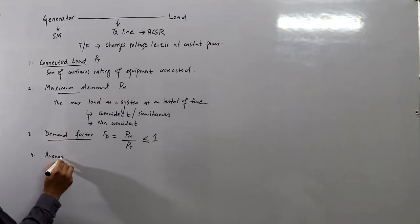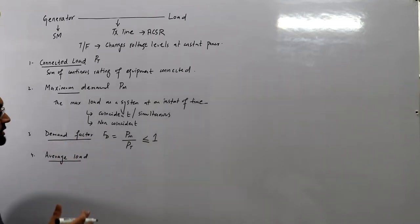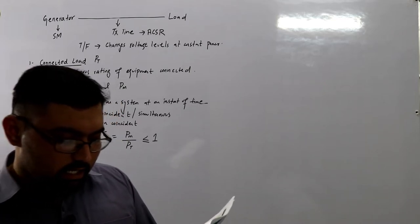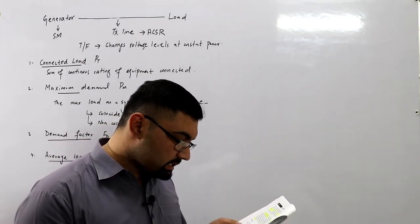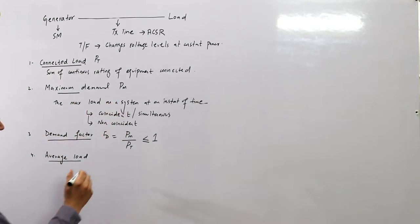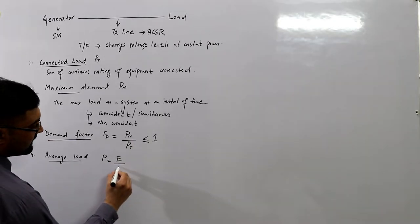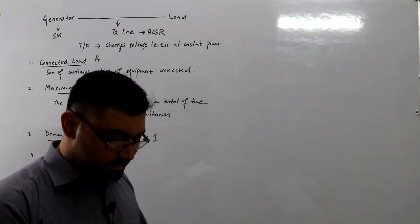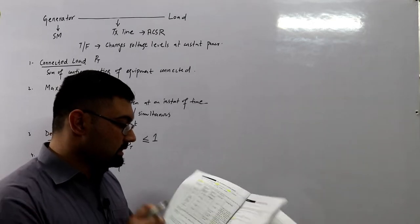The fourth term is average load. The average load is the energy units consumed divided by the time over which they are considered: P = E / T. It represents the kilowatt rating of equipment used by a consumer during a specified period.